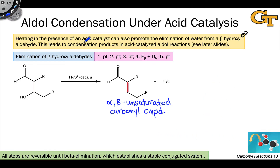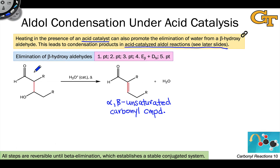We've just seen the elimination of water from an aldol product under basic conditions, but an acid catalyst can also promote this elimination. This is extremely common in acid-catalyzed aldol reactions, which we'll look at in detail in a later video. Again, the product is an alpha-beta-unsaturated carbonyl compound and a byproduct is water. The mechanism here is a little bit different because it doesn't go through an enolate intermediate since we're under acidic conditions.